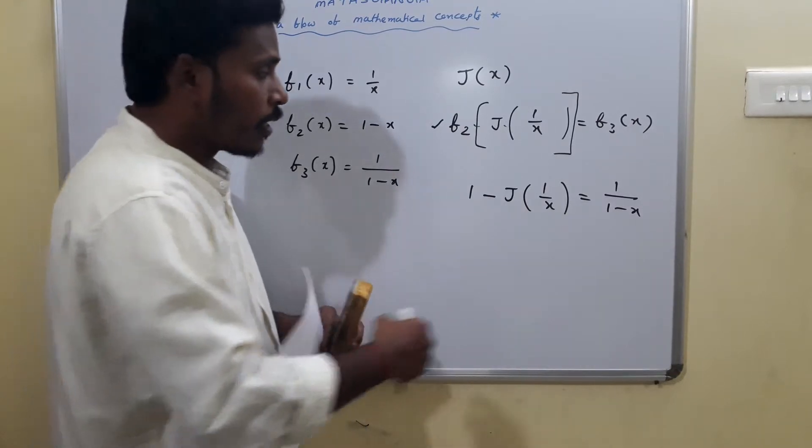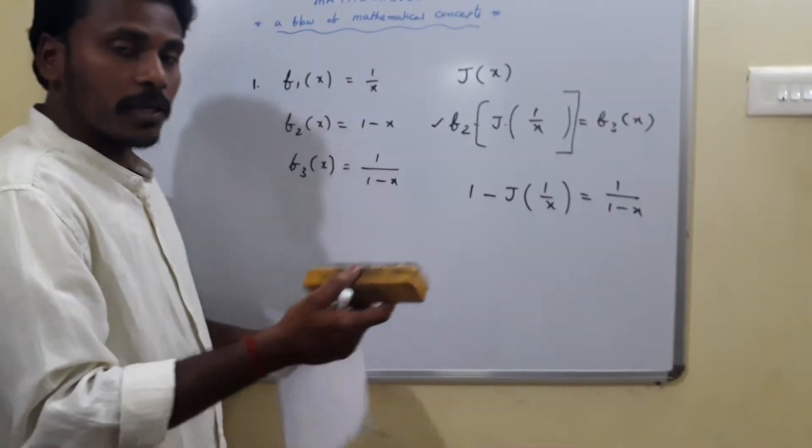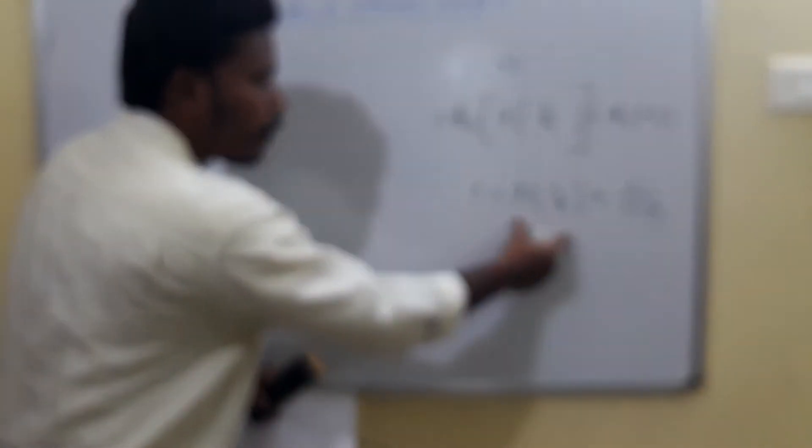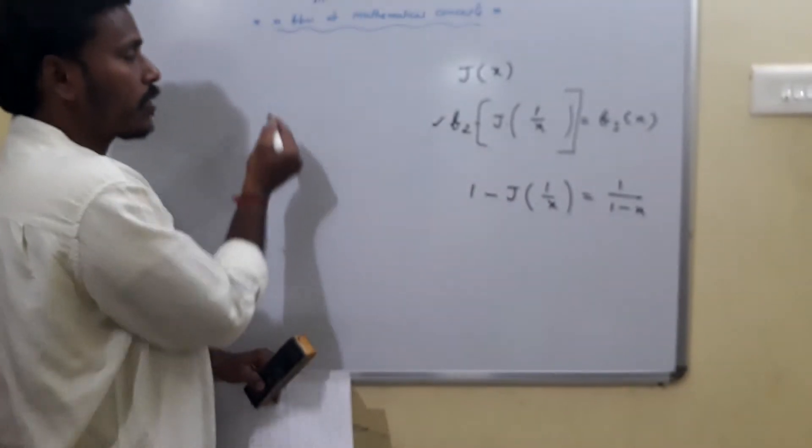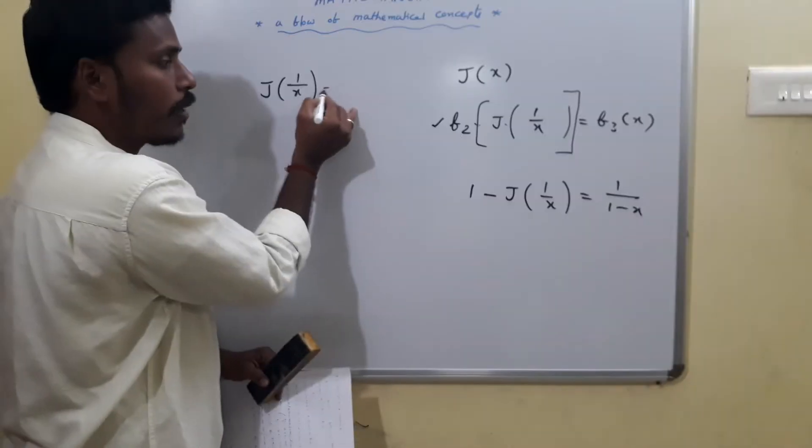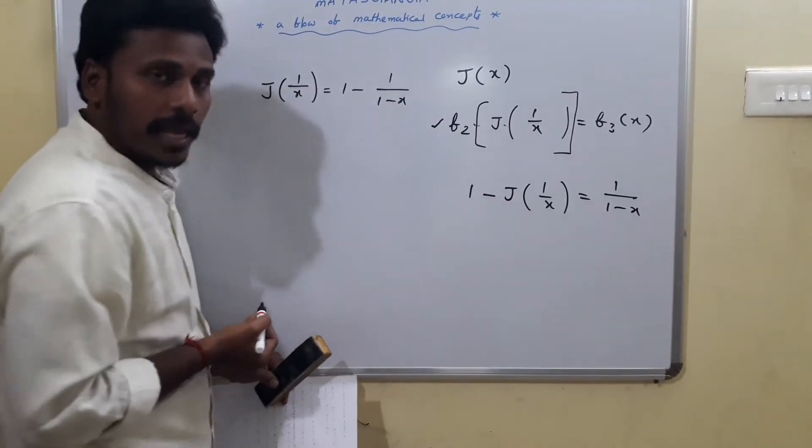So how can we solve? 1 minus J of 1 by x equals 1 by 1 minus x. Now what is J of 1 by x? That 1 minus 1 by 1 minus x to the side, J of 1 by x equals 1 minus 1 by 1 minus x.